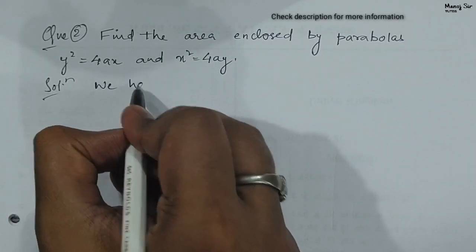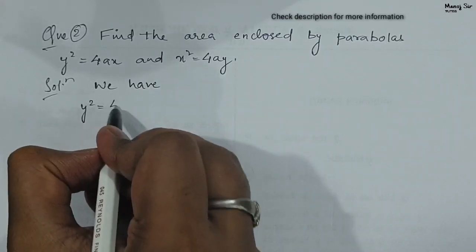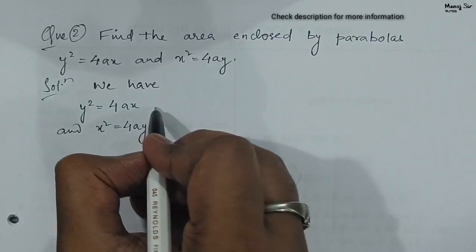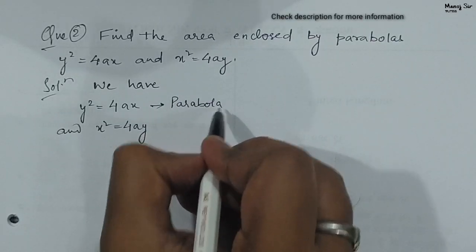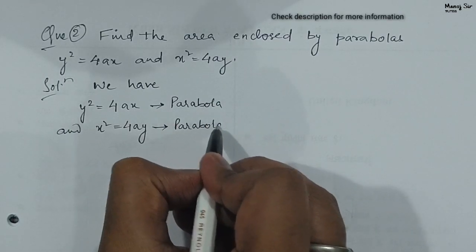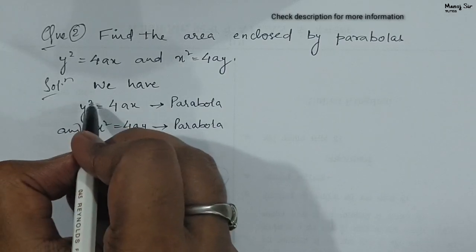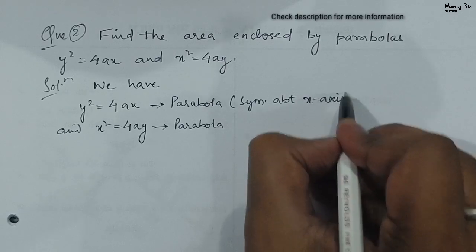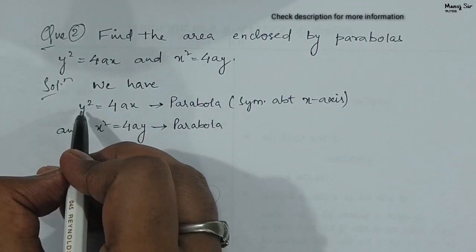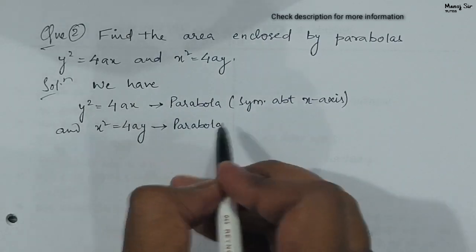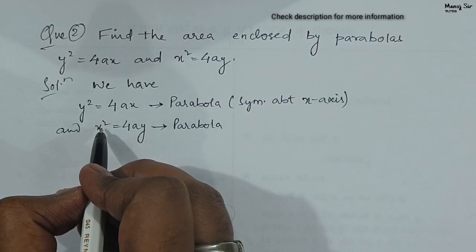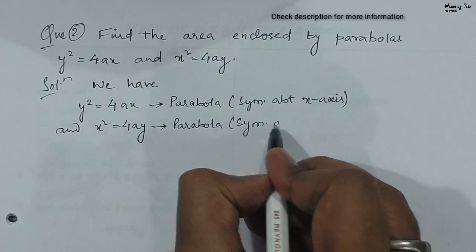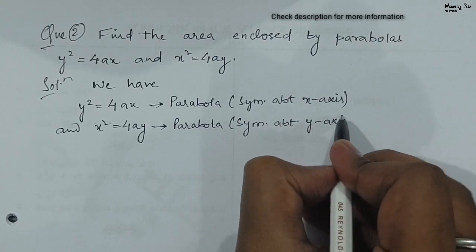We have y² = 4ax and x² = 4ay. For y² = 4ax, since the power of y is even, this parabola is symmetric about the x-axis. For x² = 4ay, since the power of x is even, this parabola is symmetric about the y-axis.